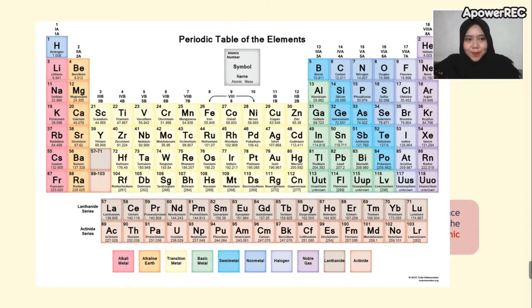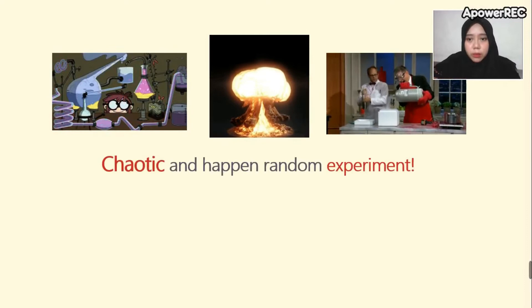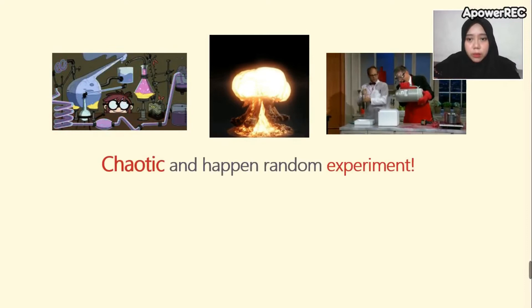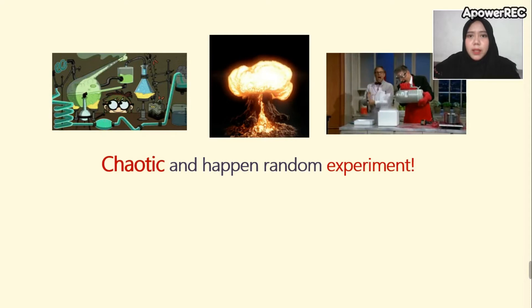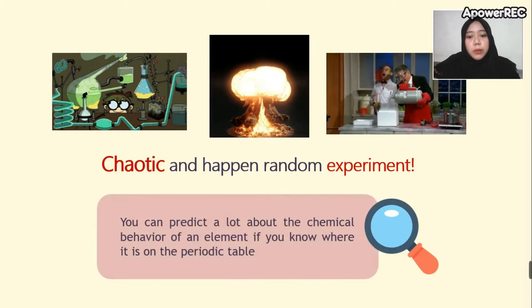We can conclude that the periodic table is the most powerful tool chemists have for organizing information — a catalog of all the different kinds of atoms in the universe. Without the periodic table, there might be chaotic and random observations in laboratories, which is really dangerous. Another reason it is invaluable is that you can predict a lot about the chemical behavior of an element if you know where it is on the periodic table.